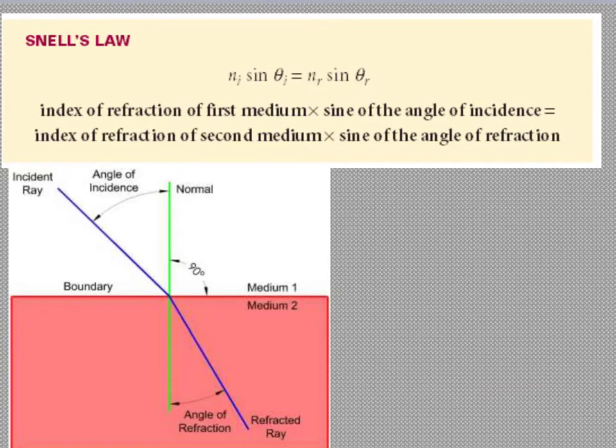So one thing that we can use to calculate exactly what that angle is is called Snell's Law. Snell's Law just tells us that the index of refraction of the first medium times the angle of refraction in that second medium. So here the i's, this is the light coming in, right? So this here, the angle of incidence is i, and this here, our angle of refraction is r. So this is ni and this is nr. So let's do an example problem with this now.